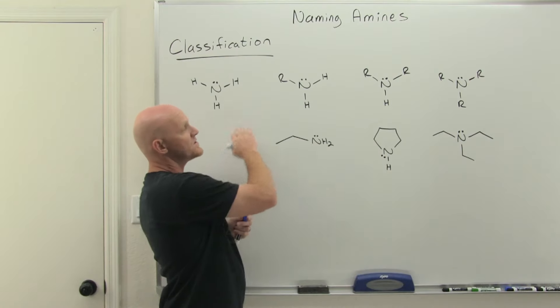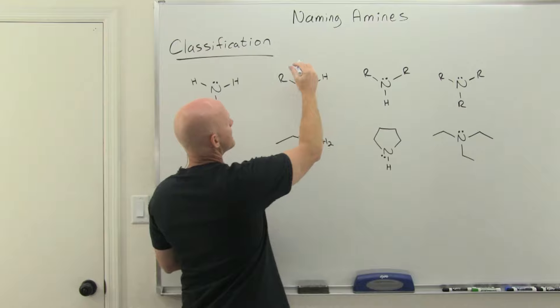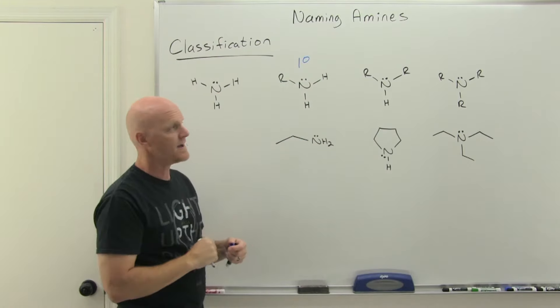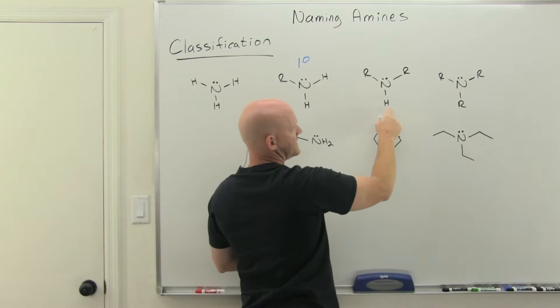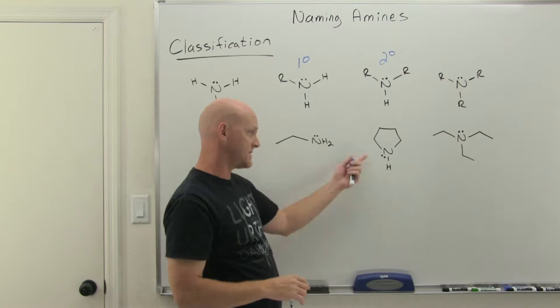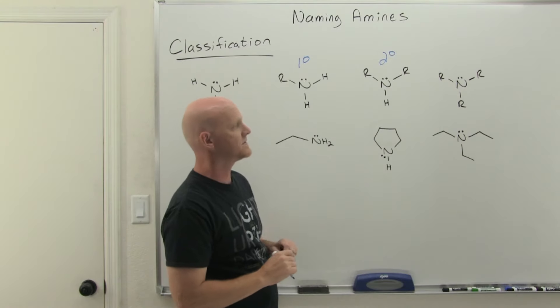When one of those three hydrogens have been replaced by a carbon chain, we call that primary, and here's ethylamine as an example of that. When two out of the three have been replaced with carbon chains, we call that secondary, and here's pyrrolidine as an example. It doesn't have to be cyclic, I just chose a cyclic example.